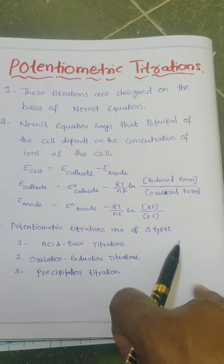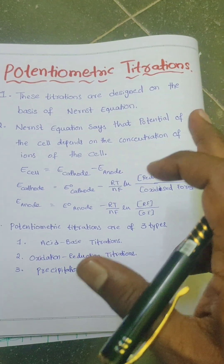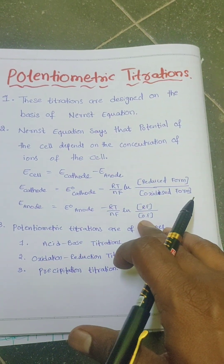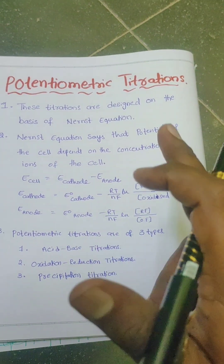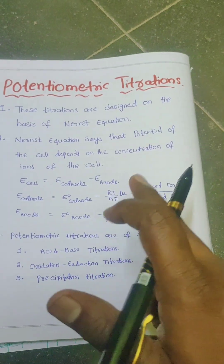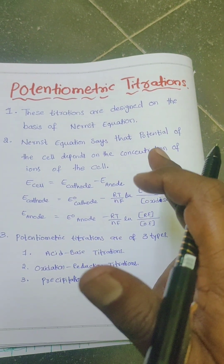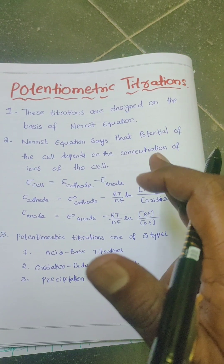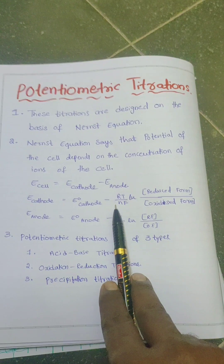Hello my dear students. In this video we are going to study about potentiometric titrations. The titrations in which EMF of the cell is used to decide the end point are known as potentiometric titrations. These titrations are designed on the basis of the Nernst equation, which says that the EMF of the cell or EMF of the electrode depends on the concentration of the ions in which the electrodes are kept.